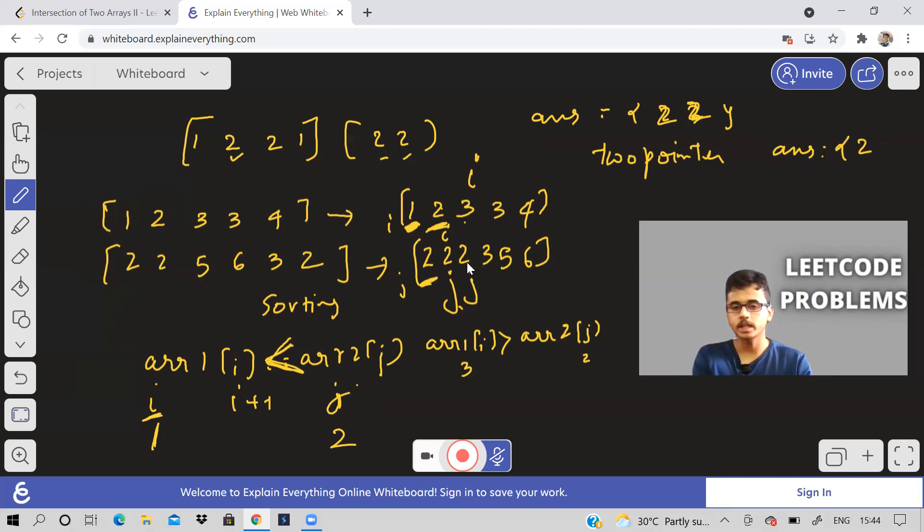But when I move my J, the same thing happens. So again, I'll move my J. Now see, array two of J will become three and array one of I is three. So three is equal to three. So another element I got like this, I'll keep moving.